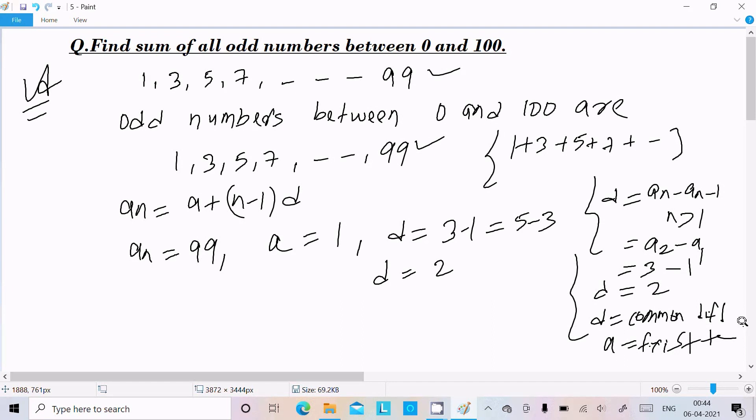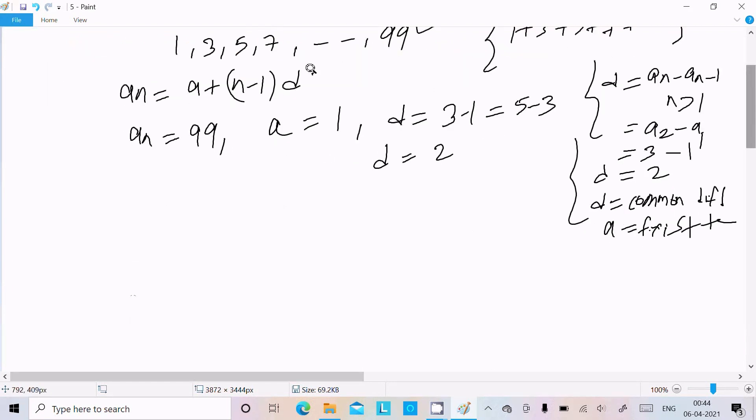After writing this, let's apply the formula. We have 99 = 1 + (n-1)×2, where a = 1 and d = 2. Moving 1 to the left: 99 - 1 = (n-1)×2, which gives us 98 = (n-1)×2.